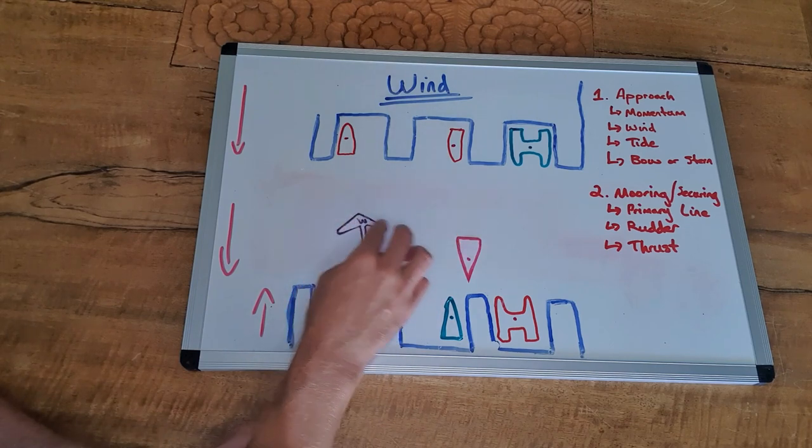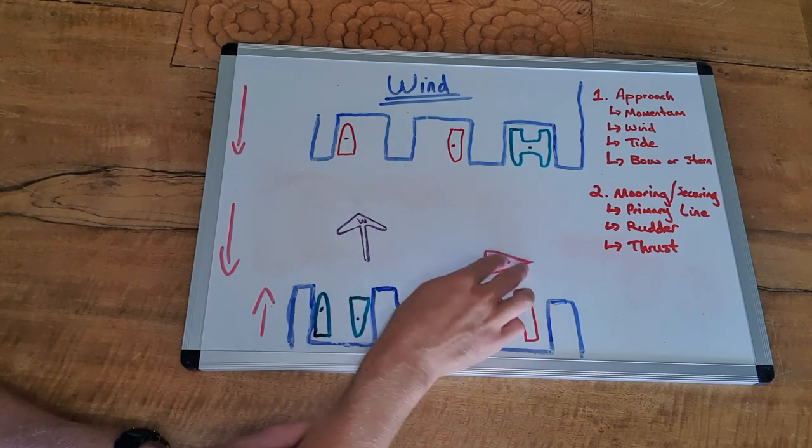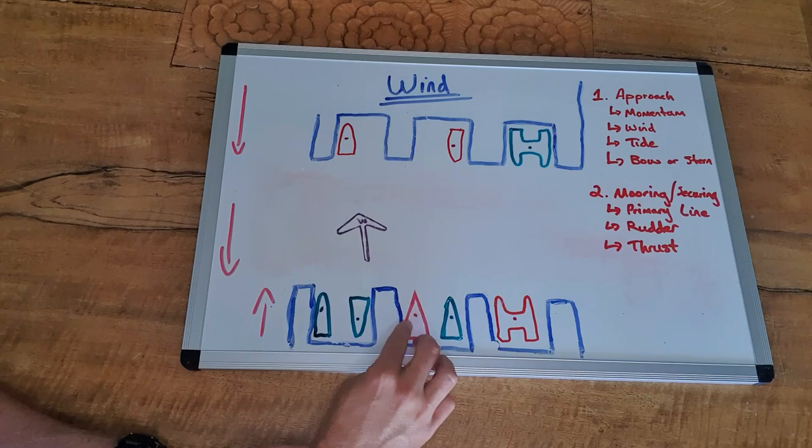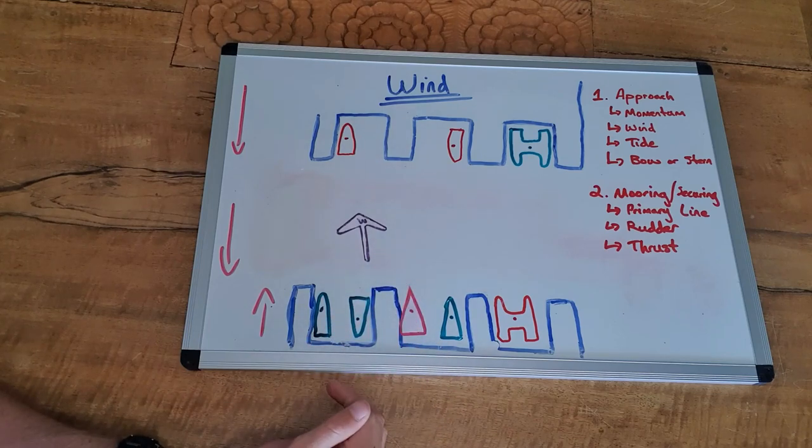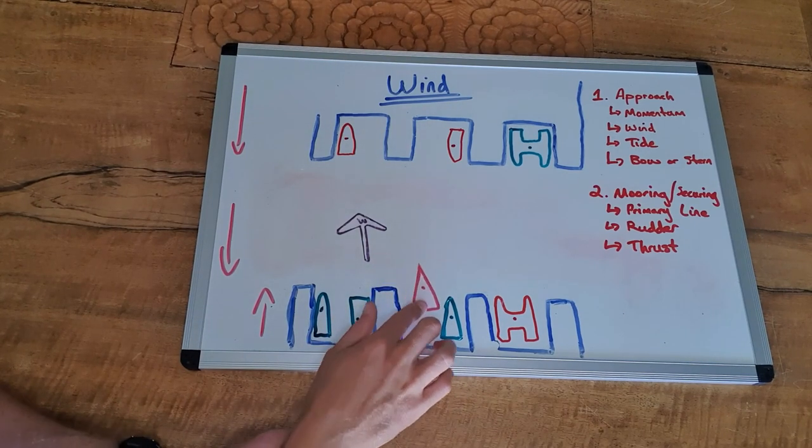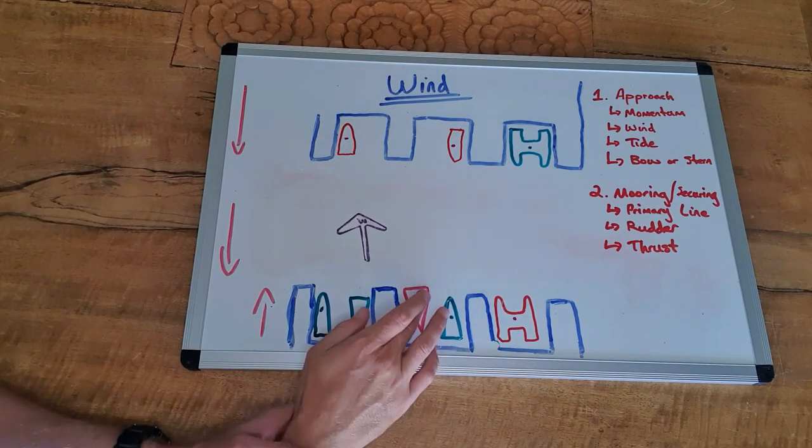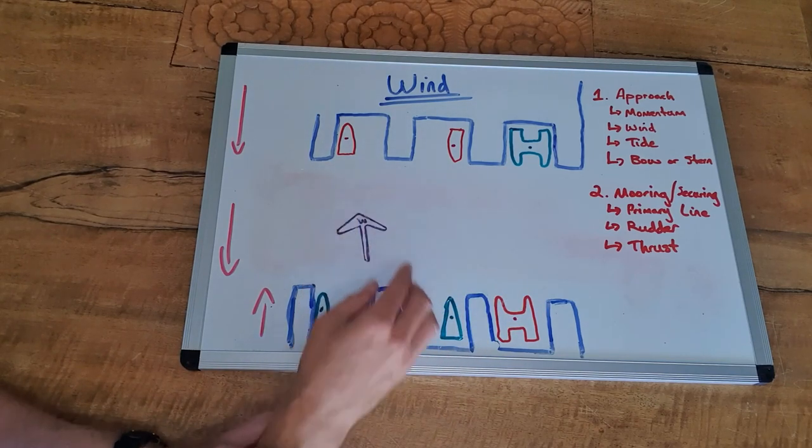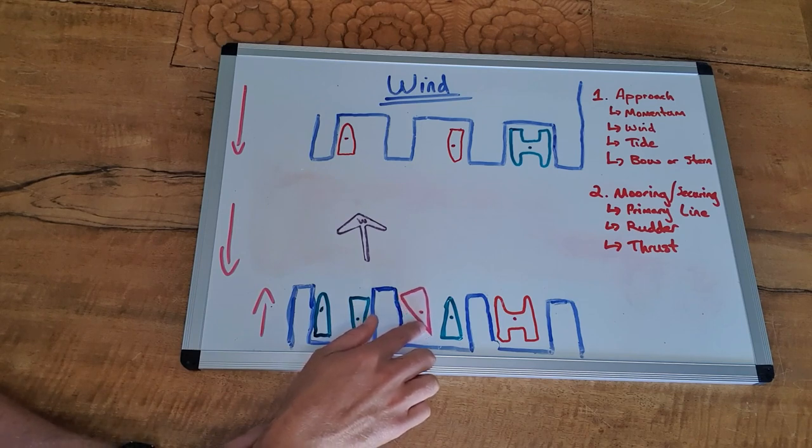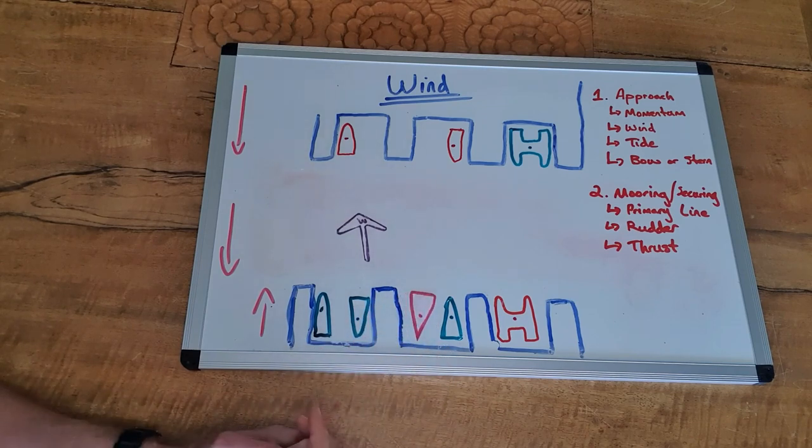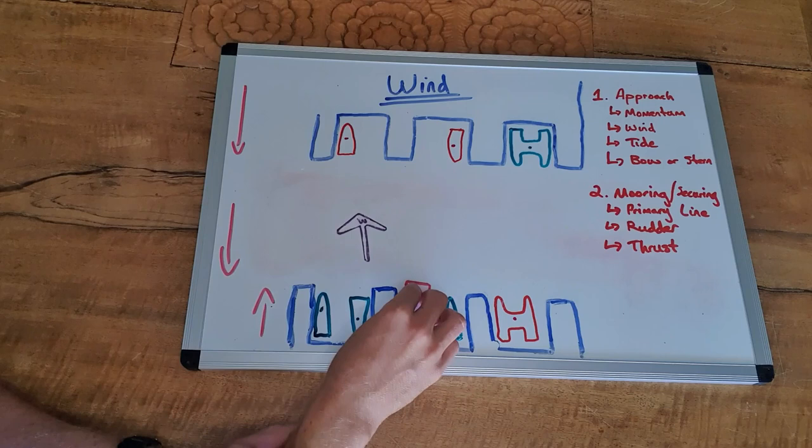So if the wind's blowing this way, by the same token, if we were to come in in reverse, get a stern line on, we would be pretty safe here. It would just blow our nose down. If we came in bow first and we didn't kind of get secured quickly enough and that wind was quite strong and has the potential to blow us off, but you'd really just want to get a bow line on first in that scenario.